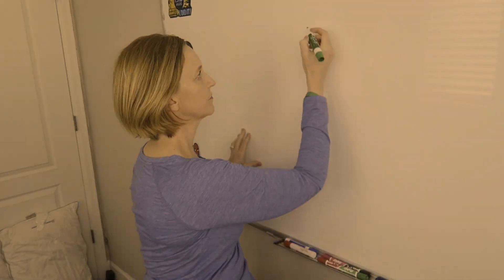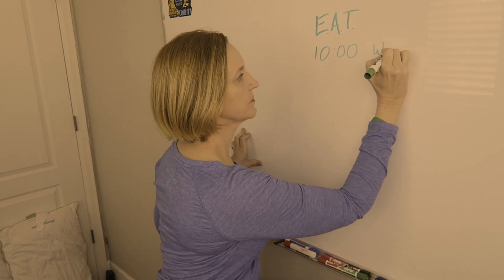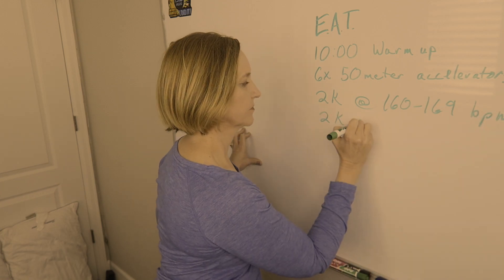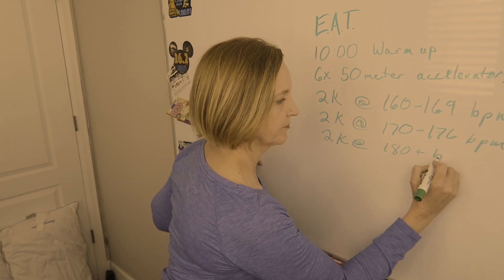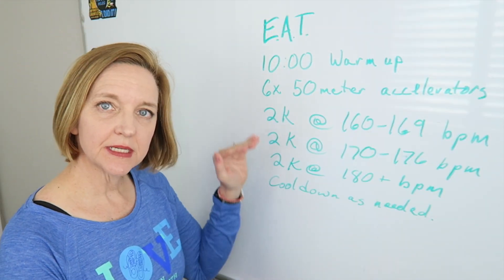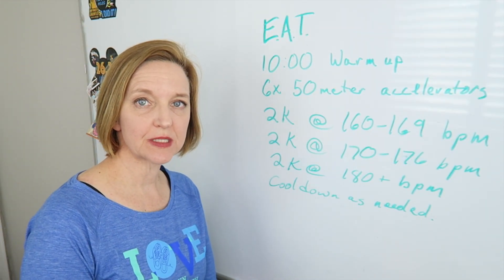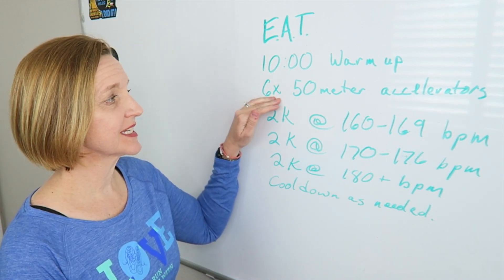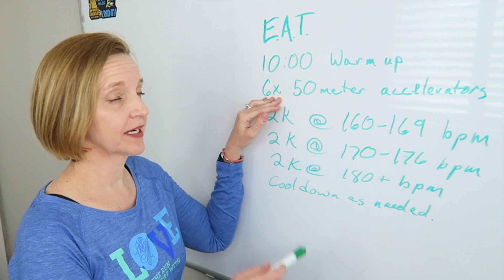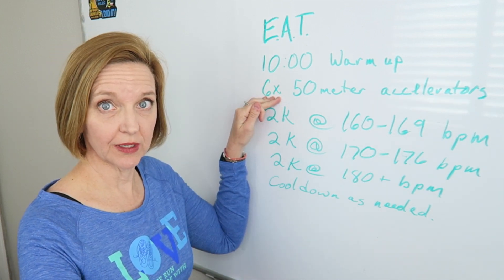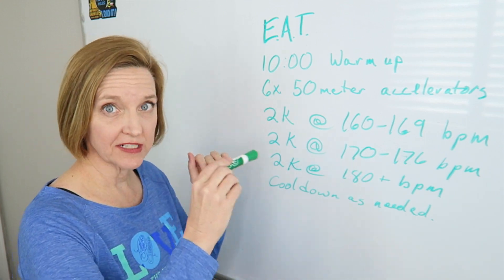Okay, so a couple of quick things before we actually get into the workout itself. Before you even start this 10 minute warm up, there is some foam rolling and dynamic warm ups that you want to get done before you even start walking and or running. This warm up is 10 minutes long at 140 beats per minute or lower. Once you've done that, you will do six by 50 meter accelerators. That's where you're going a little faster and then back down to an easy jog across that 50 meters.